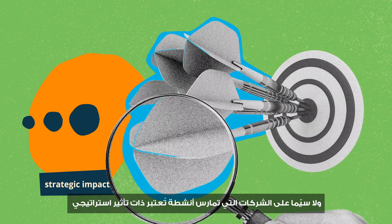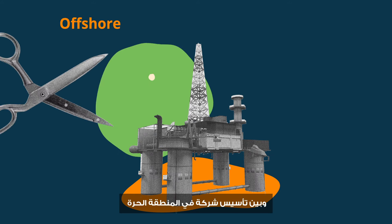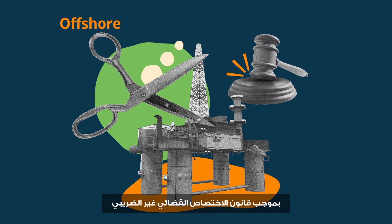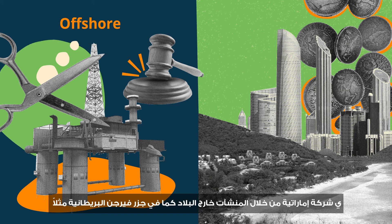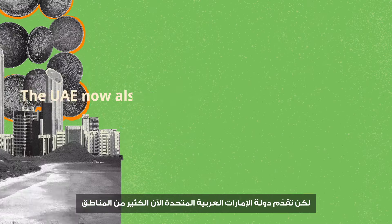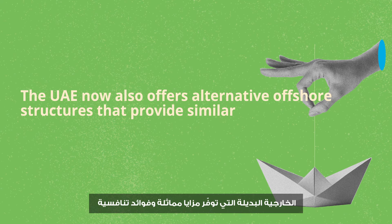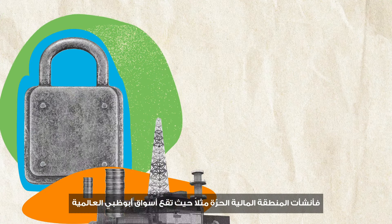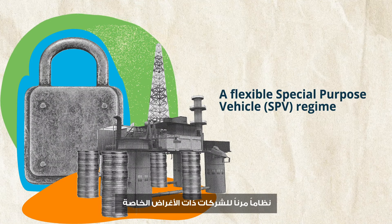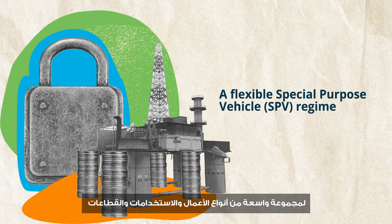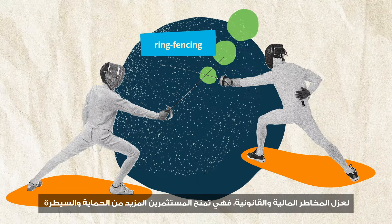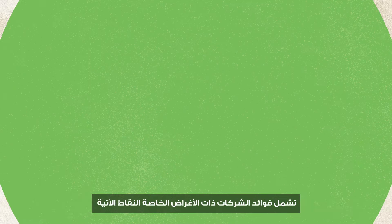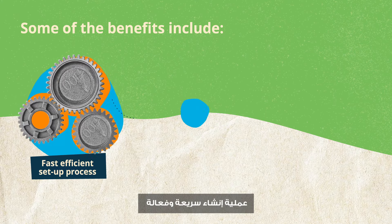Offshore — not to be confused with a free zone company setup — an offshore company is usually formed under a no-tax jurisdiction law to avoid the tax laws of a country. Traditionally, foreign investors could hold interests in a UAE business via offshore structures such as the British Virgin Islands. The UAE now also offers alternative offshore structures, for instance Abu Dhabi Global Markets' financial free zone, which created a flexible Special Purpose Vehicle (SPV) regime for a broad range of business types. SPVs are corporate vehicles holding interest in mainland companies, established to isolate financial and legal risk by ring-fencing assets and liabilities, offering investors greater protection and control.